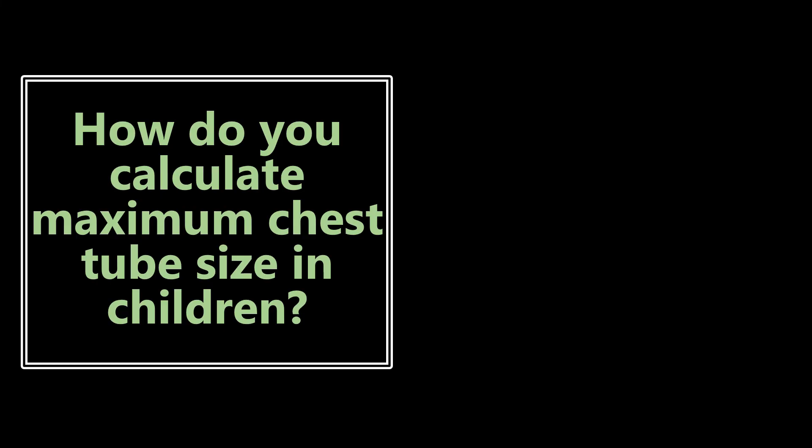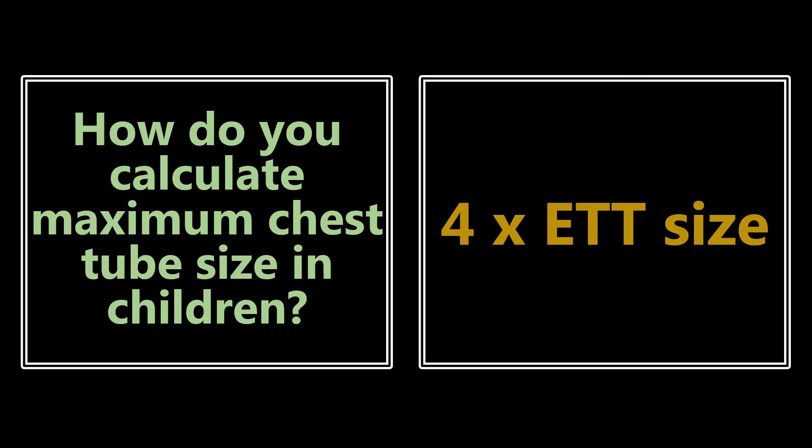How do you calculate the maximum chest tube size in children? It's four times the endotracheal tube size. So calculate the ET tube size using age divided by four plus four, then multiply that number by four to get the maximum chest tube size. These calculations are easy points on the exam if you know the formulas.